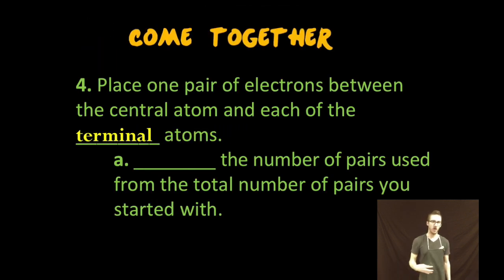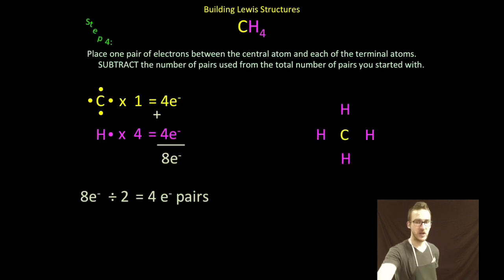Step four, we're going to place one pair of electrons between the central atom and each of the terminal atoms and we'll subtract that number of pairs used from the total number of pairs that we started with. So I'm going to put a pair in between that central atom and each of the terminal or non-central atoms.